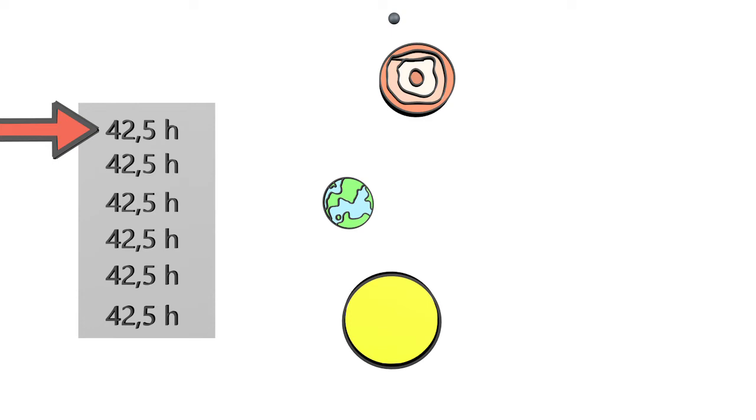Römer thought he would have to wait 42.5 hours each time to watch Io emerge from Jupiter's shadow. He made a table with the expected exit times. When he pointed his telescope at Jupiter, he found that the exit was becoming more and more delayed. After a few months, Io even stepped out several minutes later than calculated.